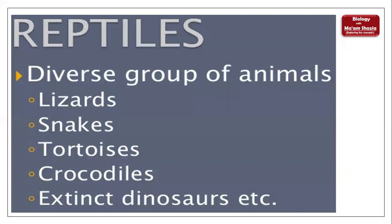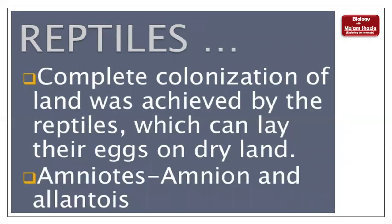Reptiles are a diverse group of animals — lizards, snakes, tortoises, crocodiles, and the extinct dinosaurs. Dinosaurs belong to the group of reptiles. Complete colonization of the land was achieved by reptiles. Amphibians were dual — they came to land — but reptiles completely settled themselves on land and developed specific features. The most important feature is their rough and dry skin. Their eggs are hard-shelled — unlike the soft, jelly-like membranes of amphibian eggs — and this is one of the features adapting them to land. These are called amniotic eggs.